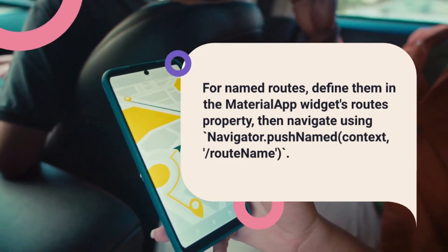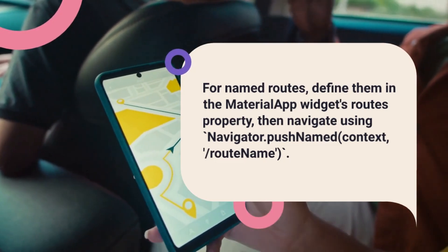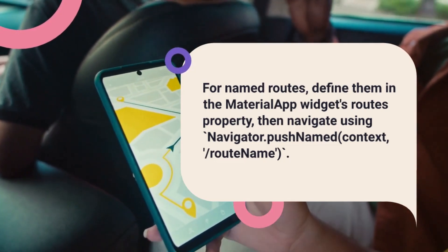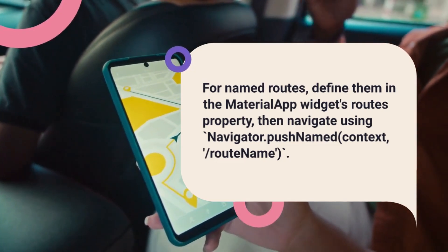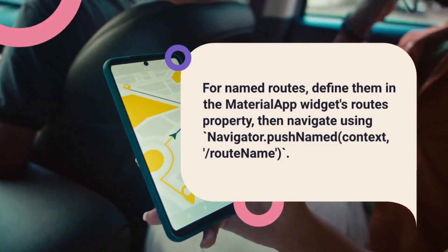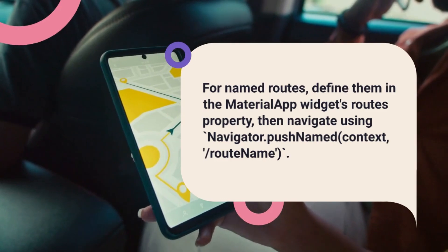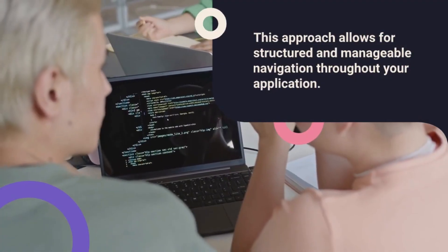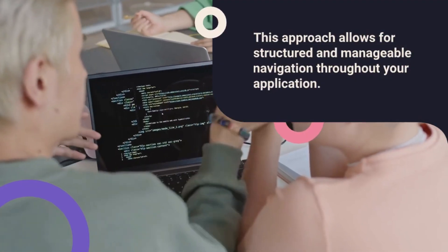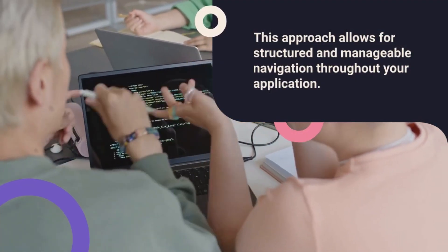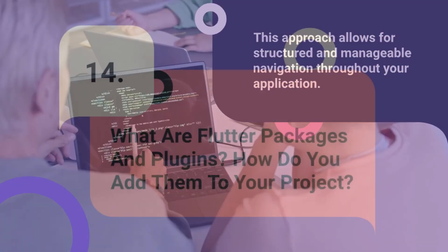For named routes, define them in the MaterialApp widget's routes property, then navigate using Navigator.pushNamed(context, routeName). This approach allows for structured and manageable navigation throughout your application.